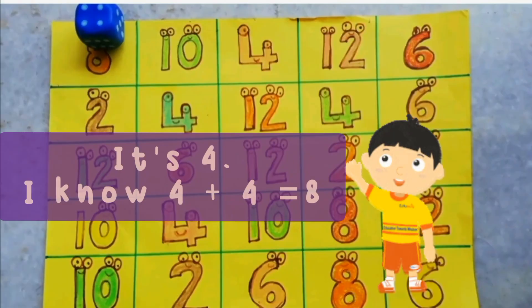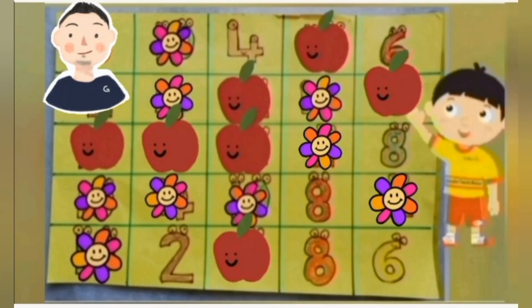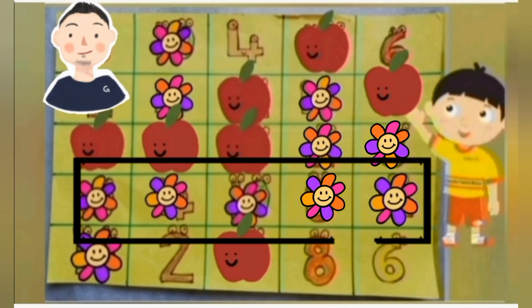It's four. I know four plus four equals eight. I shall mark all the eights in these rows. Hooray! I have won the game.